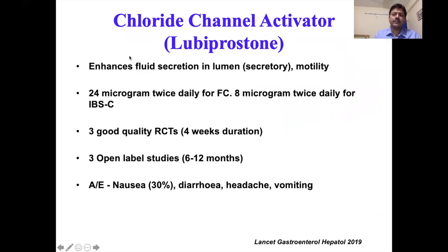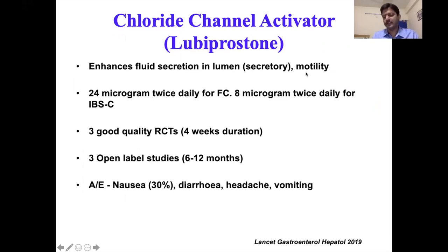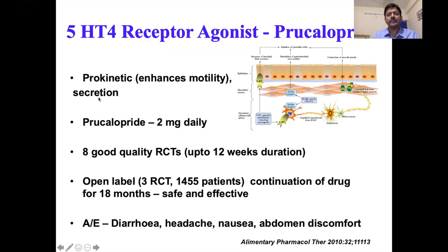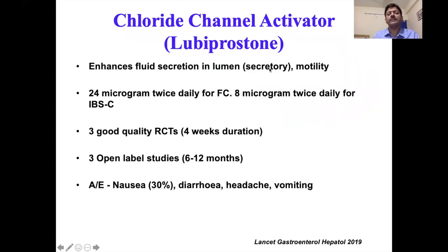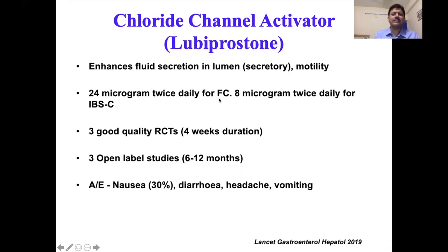The 5-HT4 agonist available in India is prucalopride. Its main effect is prokinetic — it enhances motility and also encourages some secretion to soften the stool. The recommended dose is 2 mg per day, and there are eight good-quality randomized controlled trials showing its efficacy. The chloride channel activator available is lubiprostone; its main effect is secretory, enhancing fluid secretion, but it also has some motility effect. The dose is 24 micrograms twice daily for functional constipation, and 8 micrograms twice daily for IBS.